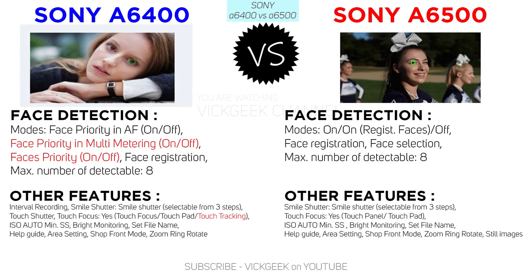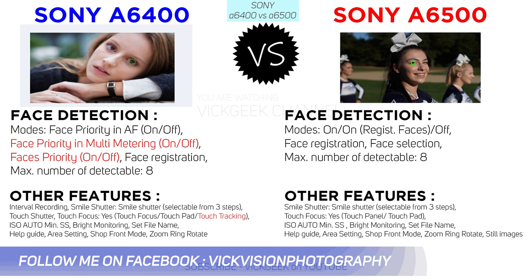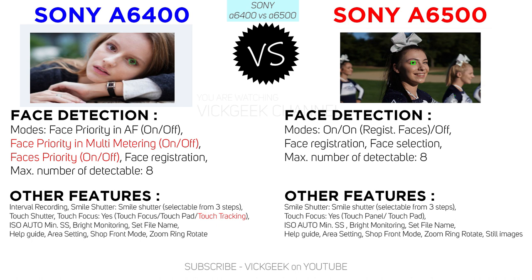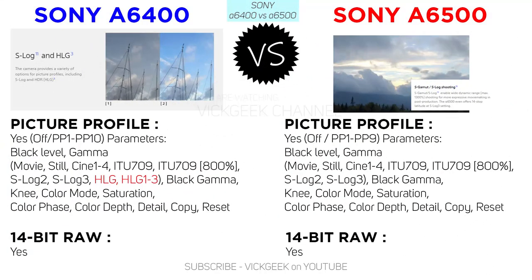Here's a key feature introduced on the a6400: real-time face tracking, which the a6500 misses. This feature is borrowed from the higher-end sports camera, the Alpha 9. This can be a deal-maker — not a deal-breaker — if you love capturing portraits, action, or even wildlife. The rest of the focusing system features remain the same.